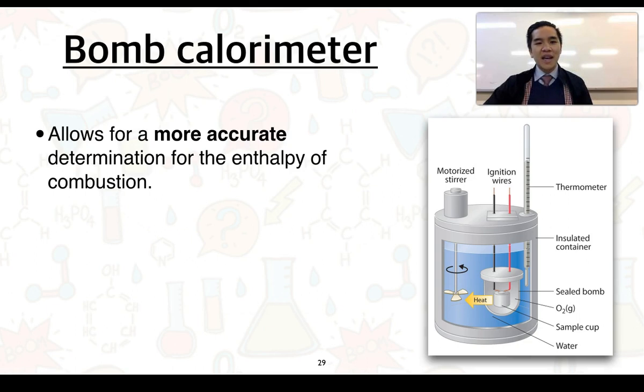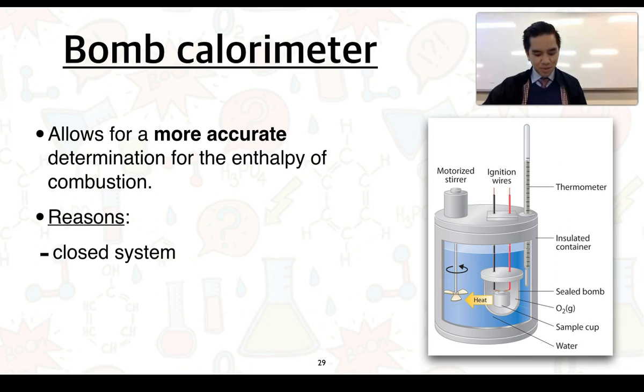We can look at using a calorimeter known as a bomb calorimeter. This allows for a more accurate determination for the enthalpy of combustion. The reason for this is because it is a closed system so we're not going to end up losing any reactants and products to the surroundings. It is heavily insulated as well, so this container would be extremely insulated.